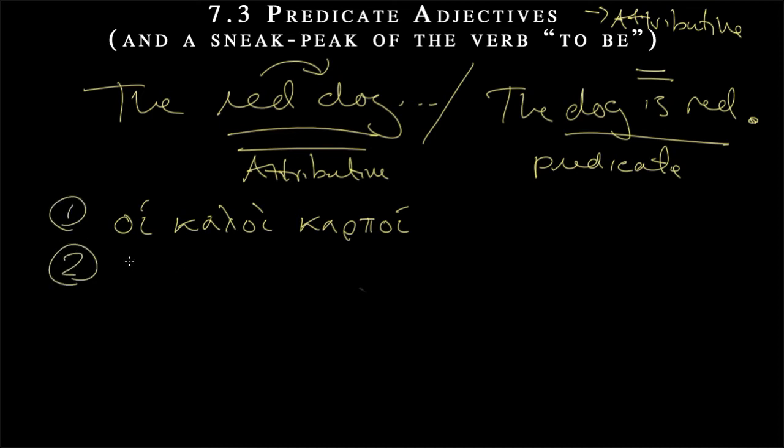That was option number one. Then we also had carpoi hoi calloi, again meaning some fruit, the good kind. Also known as just good fruit, not the good, this is the good fruit, this is just good fruit.